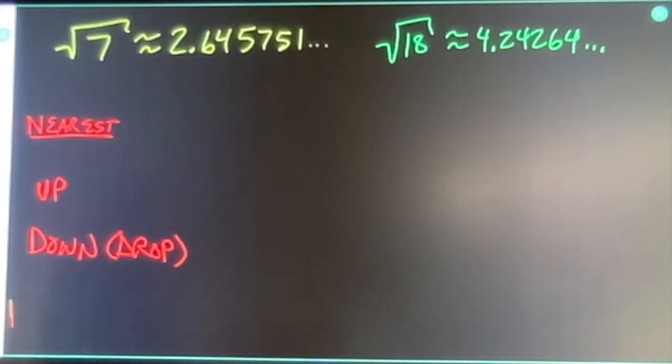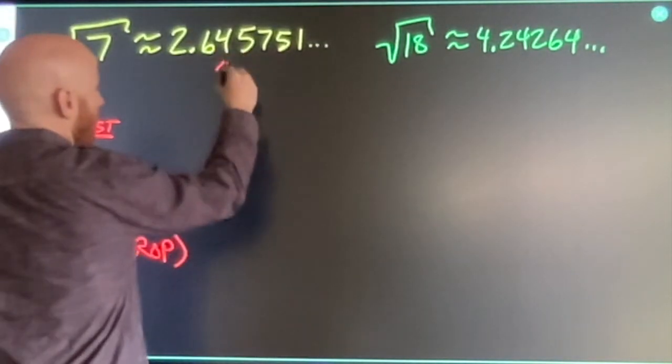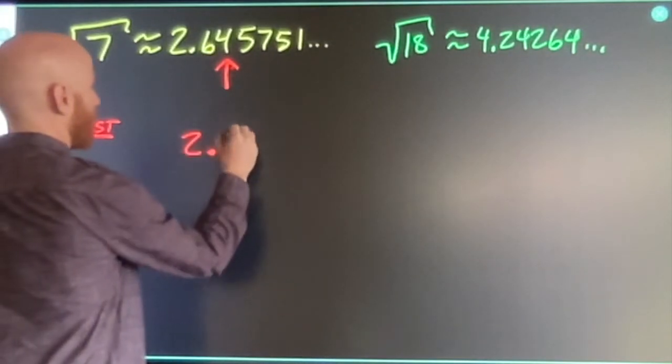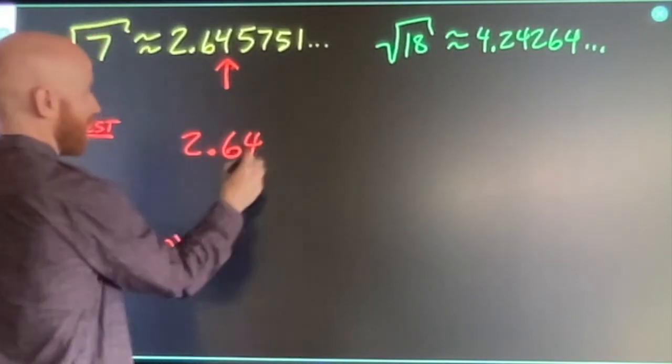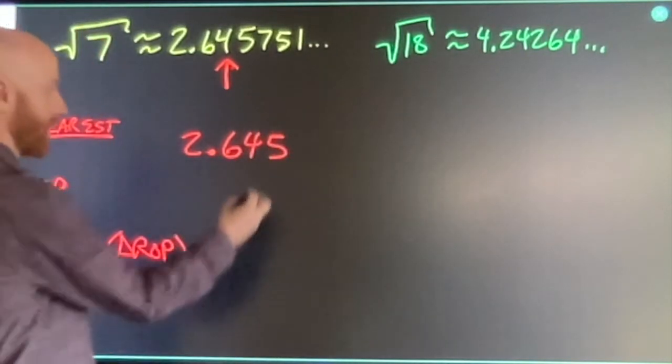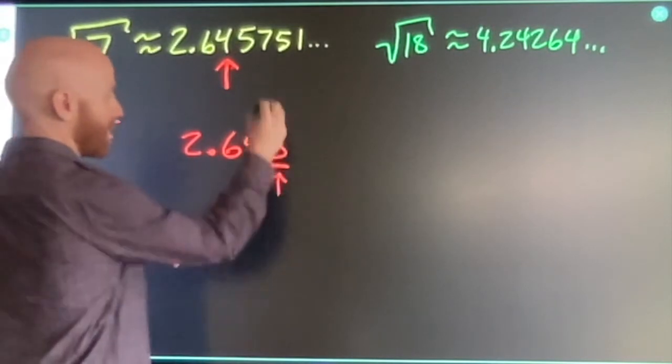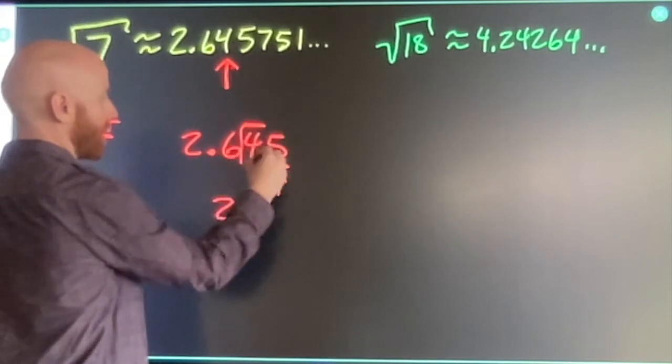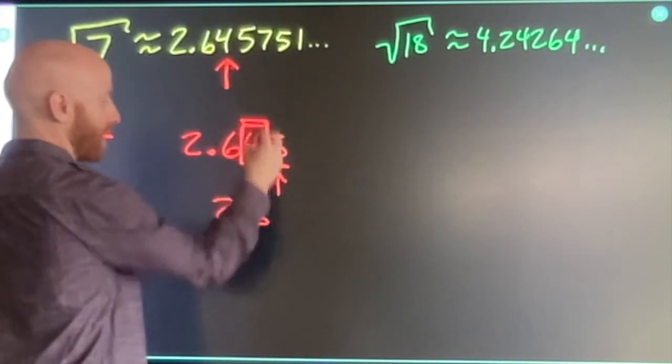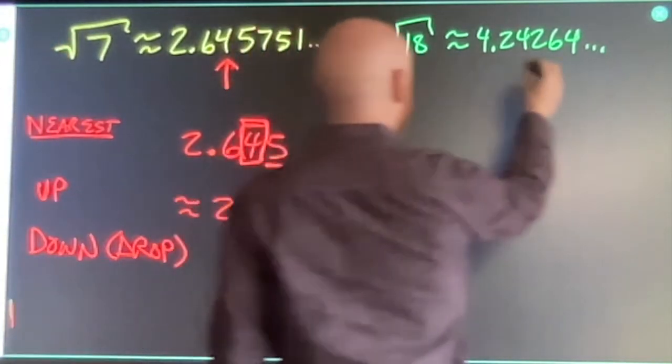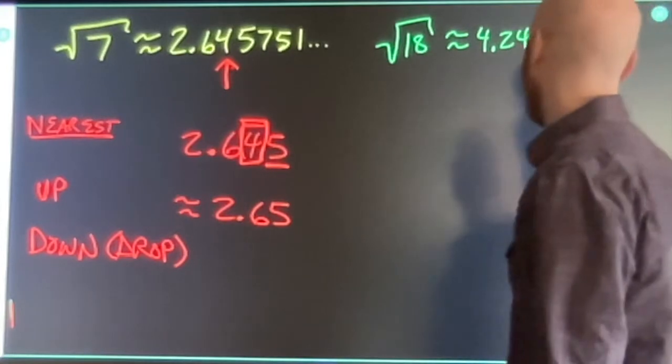If I ask you to round to the hundredths place, that's the second digit after a decimal point. So again, if you're going to the nearest hundredths, you have to look one digit past the hundredths place. This is a five. That means we're going to round up. Two point six. This is the digit that we care about. That's the digit that rounds up. Two point six five.